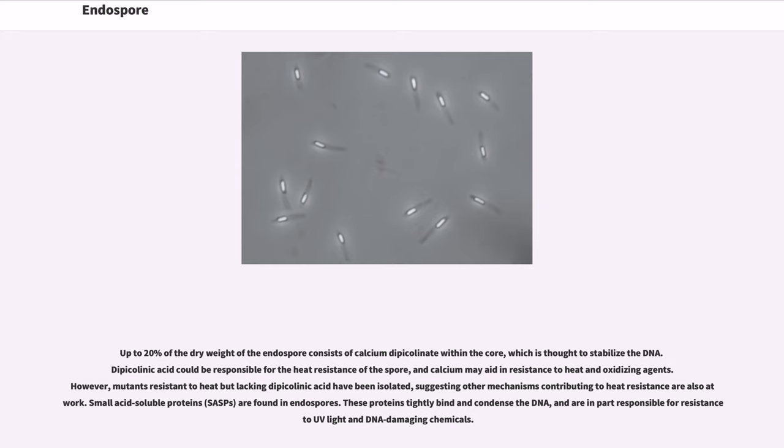Small acid-soluble proteins are found in endospores. These proteins tightly bind and condense the DNA, and are in part responsible for resistance to UV light and DNA damaging chemicals.